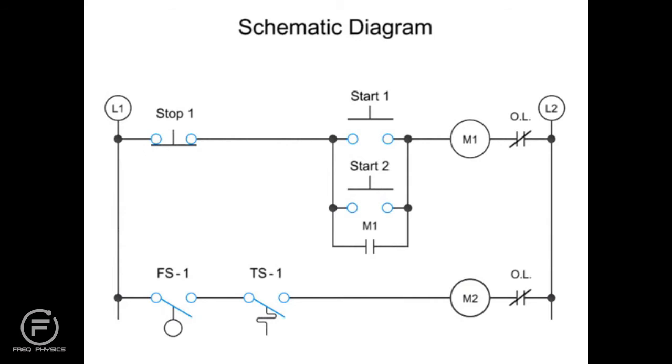Next, let's consider OR logic. This can occur when there are two normally open control functions connected in a parallel arrangement, represented here by two start push buttons. Thus, motor coil M1 can be energized by manually pressing start switch 1 or start switch 2.